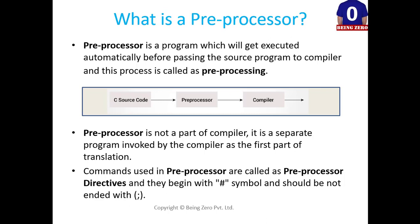Preprocessor is not a part of compiler, it is a separate program invoked by compiler as the first part of translation. Commands used in a preprocessor are called as preprocessor directives and they begin with hash symbol and should not be ended with semicolon.